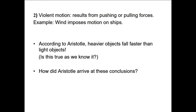The second type of motion is called violent motion. Violent motion is different from natural motion as it results from pushing or pulling forces. For example, a ship on the sea would move because of the wind, as the wind imposes a force on the ship. That's violent motion — it needs a force. Another important comment according to Aristotle is that heavier objects would fall faster than lighter objects.